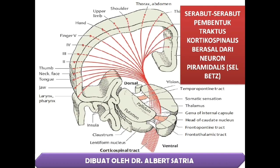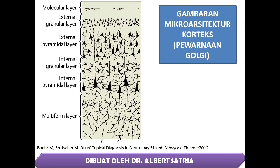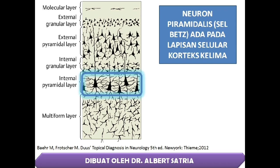Serabut-serabut pembentuk Traktus Corticospinalis berasal dari Neuron Pyramidalis atau yang disebut dengan Cellbed. Ini adalah gambar mikro arsitektur dari Cortex dengan pewarnaan Golgi. Neuron Pyramidalis atau Cellbed ada pada lapisan seluler Cortex ke 5.